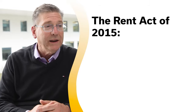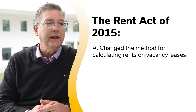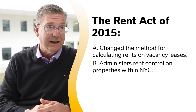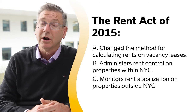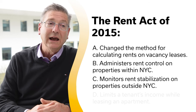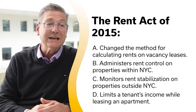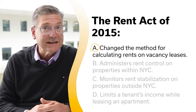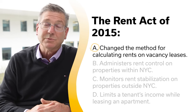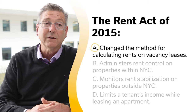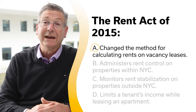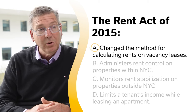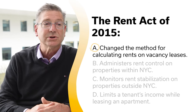The Rent Act of 2015: A, changed the method for calculating rents on vacancy leases; B, administers rent control on properties within New York City; C, monitors rent stabilization on properties outside New York City; or D, limits a tenant's income while leasing an apartment. The correct answer is A, changed the method for calculating rents on vacancy leases. The Rent Act of 2015, effective June 15, 2015 through June 15, 2019, changed the method for calculating rents on vacancy leases by allowing landlords to request the unit's rent control or stabilization be removed based on the tenant's income or vacant unit's registered rent.